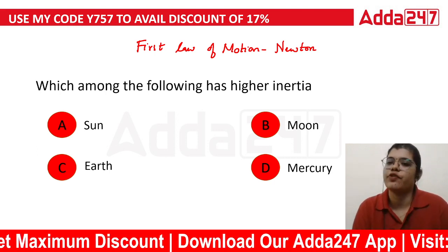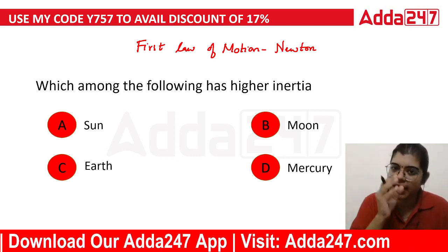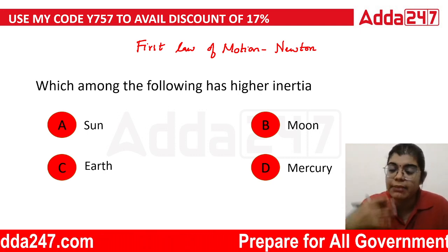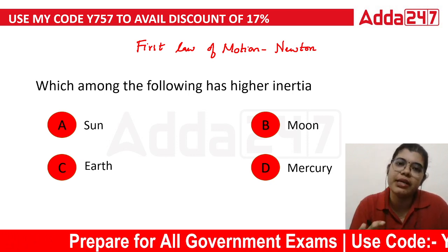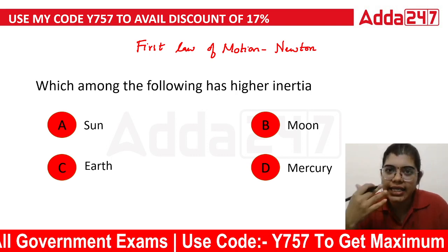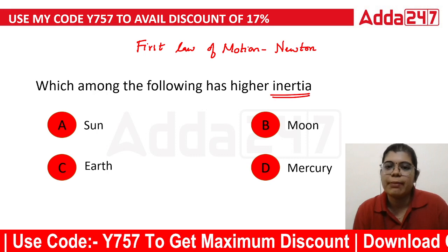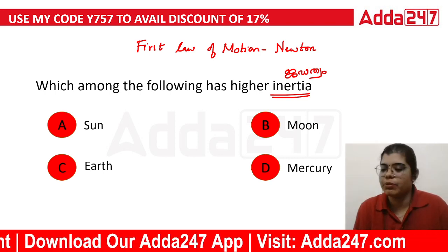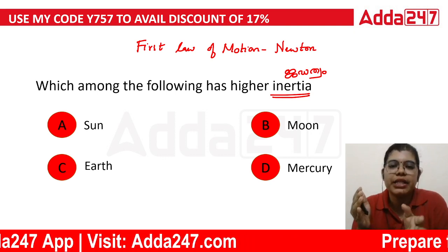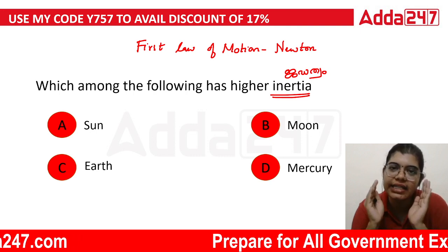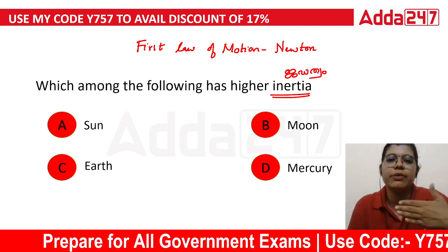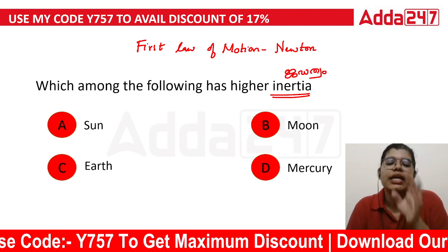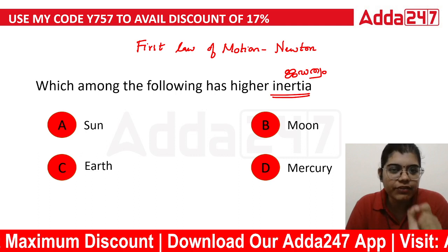There are three types of inertia: inertia of motion, inertia of rest, and inertia of direction. The body wants to continue with the motion. Inertia is the tendency of a body to resist change in its state. Which among the following has higher inertia?